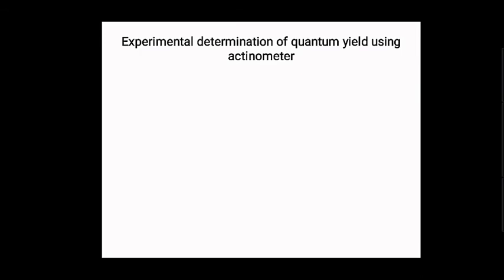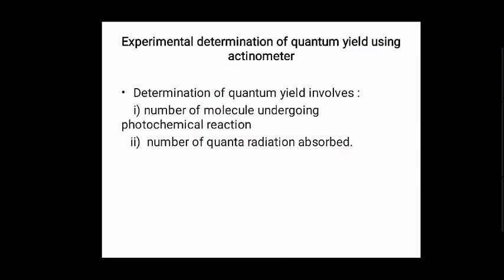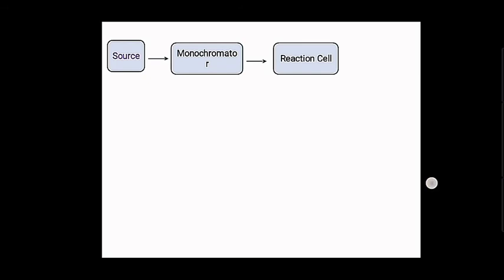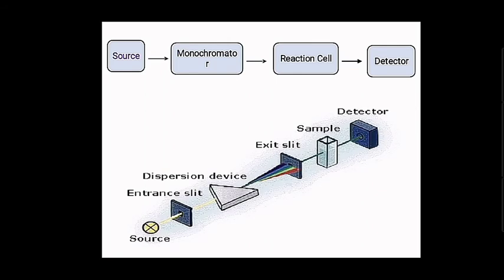Next is the determination of quantum yield using an actinometer. For the determination of quantum yield we can use different methods, such as an experimental method using an actinometer or a titration method. In actinometry, the determination involves the number of molecules undergoing photochemical reaction and the number of quanta of radiation absorbed. The instrument used for this determination is known as an actinometer, and the process is known as actinometry. The actinometer has the following components: a source, a monochromator, a reaction cell, and a detector.